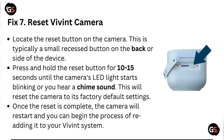Fix seven: factory reset the Vivint camera. Locate the reset button on the camera — this is typically a small recessed button on the back or side of the device. Press and hold the reset button for 10 to 15 seconds until the camera's LED lights start blinking or you hear a chime sound. This will reset the camera to its factory default settings, after which you can begin re-adding it to your Vivint system.